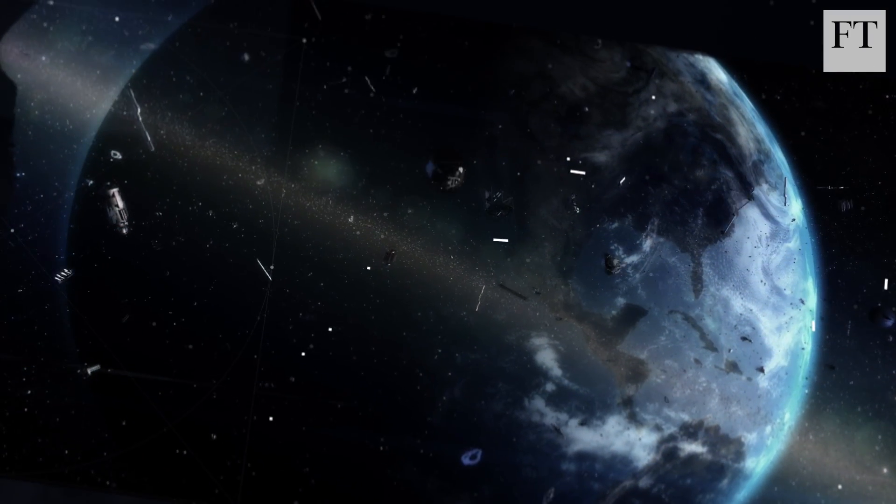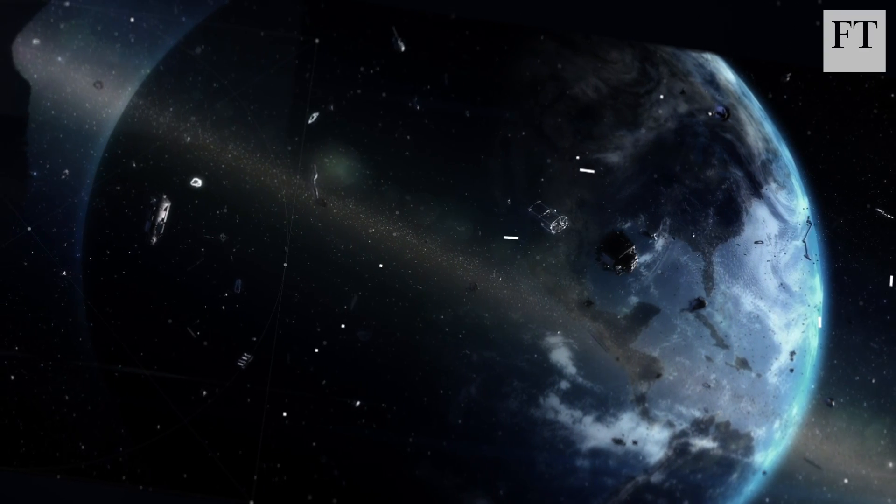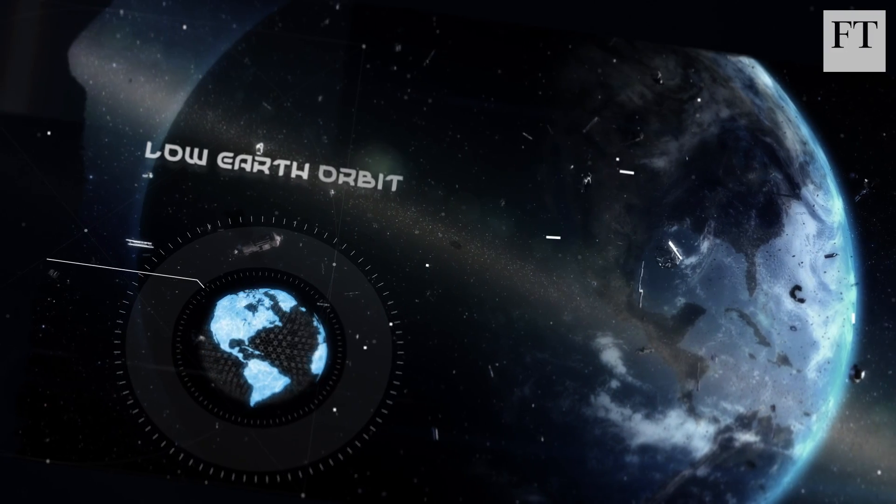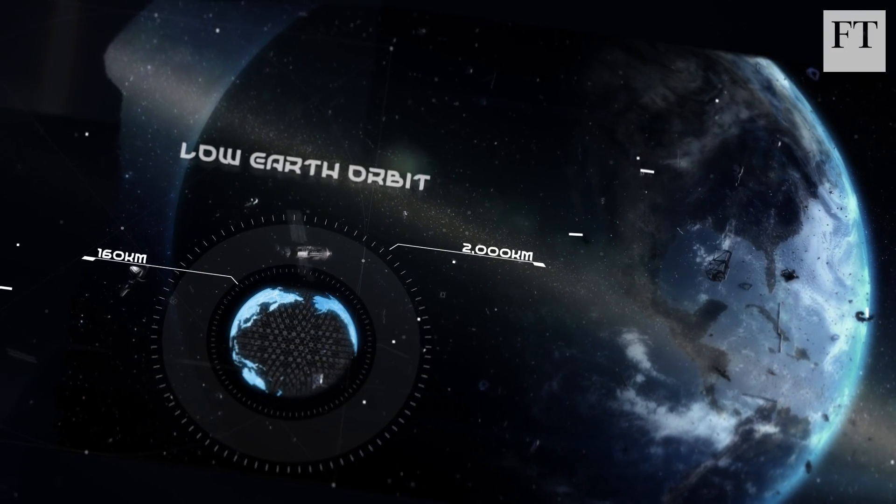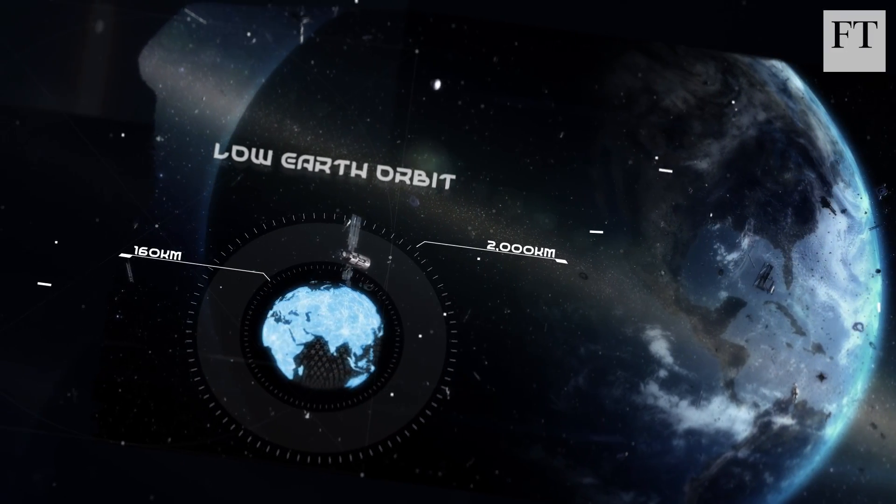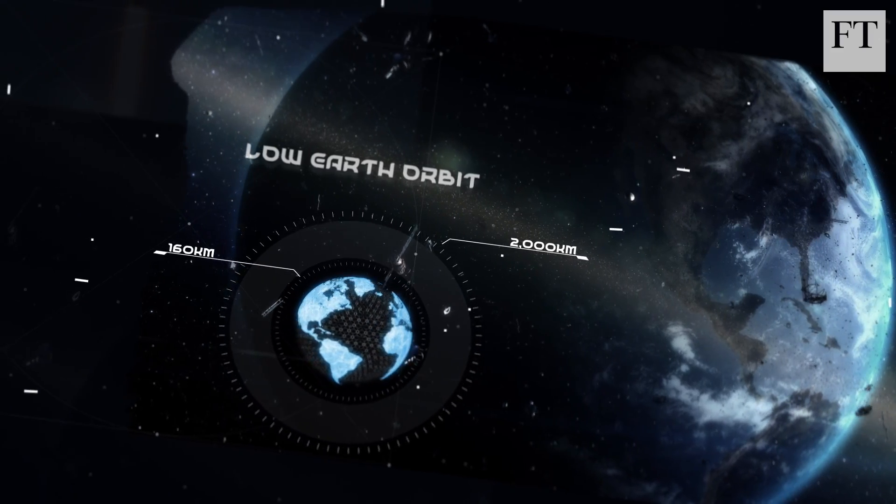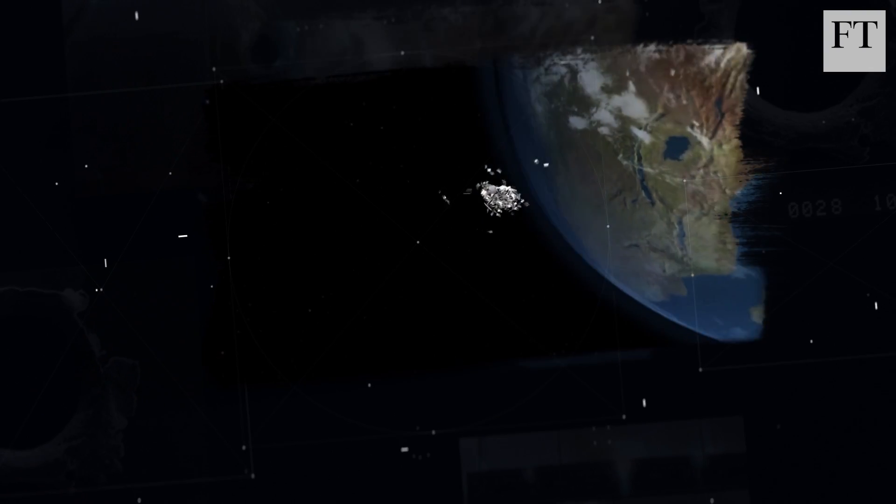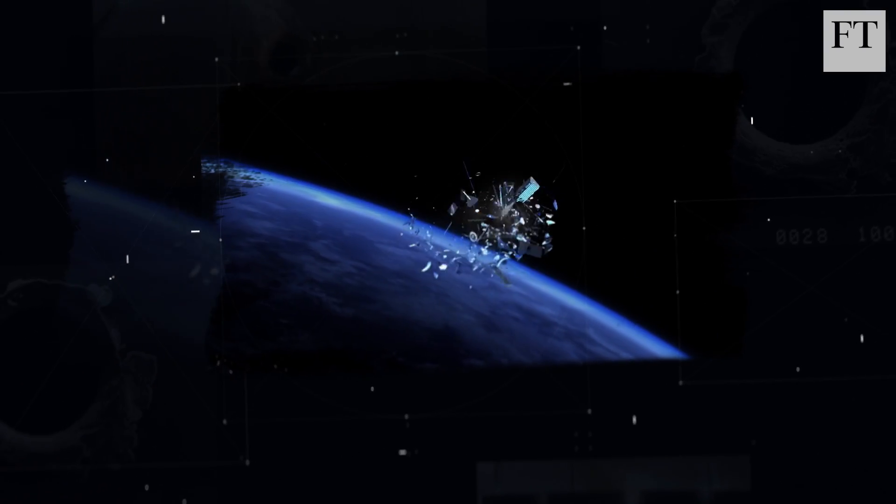There are now at least a quarter of a million pieces of space junk, about the size of a golf ball or larger, whizzing around in low-Earth orbit, an area stretching from about 160 kilometres to 2,000 kilometres above the Earth. Travelling up to seven times as fast as a bullet, even a fleck of paint can cripple craft or equipment.